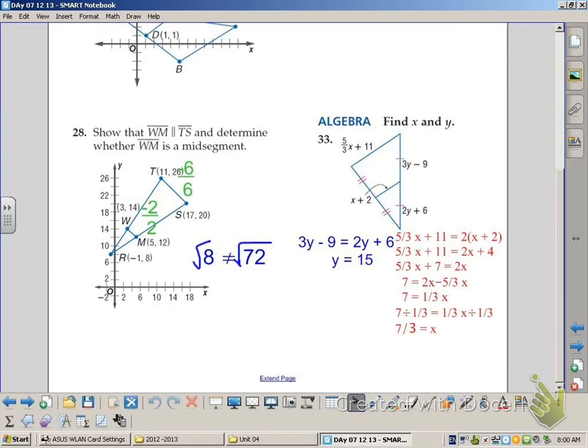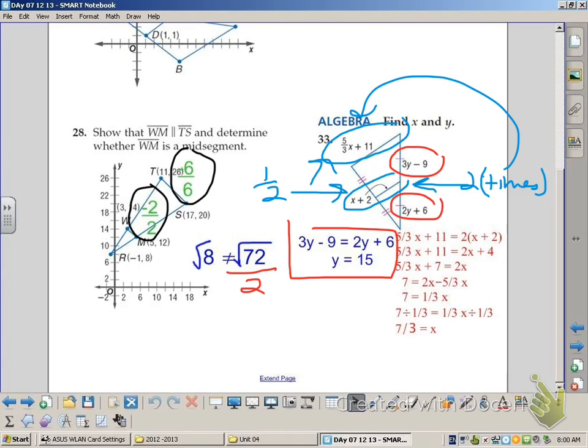When you look at number 28, you can see that the slopes are equal, which means the lines are parallel because negative 6 over 6 and negative 2 over 2 are both equal to 1. And then we find out that it's not a mid-segment because when we divide the square root of 72 by 2, we do not get the same as the square root of 8.